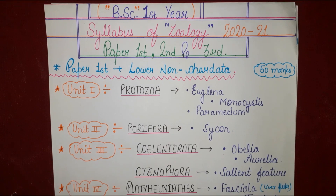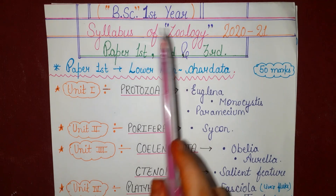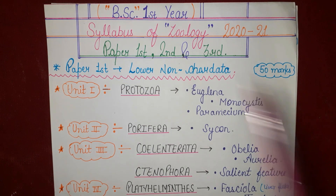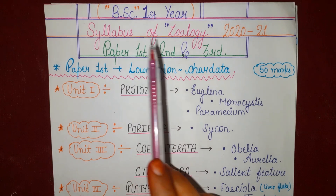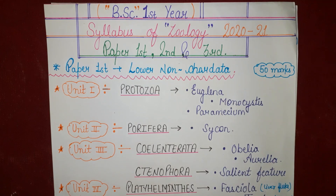Hey everyone, welcome to KNOV Biology with Ashna Siddiqui. Today we will discuss BSc First Year Zoology Syllabus, Session 2020-21, which is divided into 3 papers: Paper 1st, Paper 2nd, and Paper 3rd. All papers are worth 50 marks each.